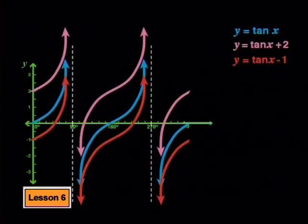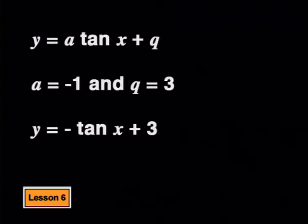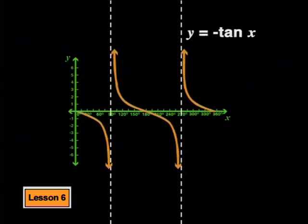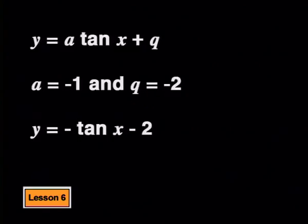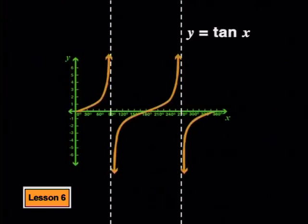We checked two q values while keeping the a value at 1. Now let's see how the graph changes if we change the a value and q value at the same time. If we make the a value negative 1, we're working with the reflection of the parent graph. Changing the q value to 3 on this graph shifts the graph up by 3 units. Changing the q value to negative 2 while keeping a at negative 1 shifts the graph 2 units down.